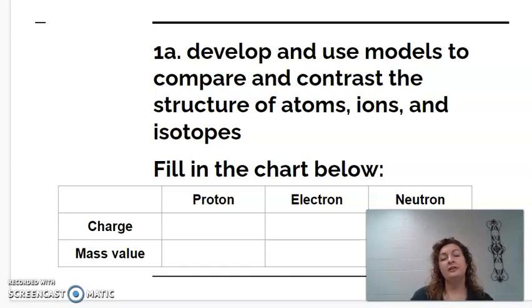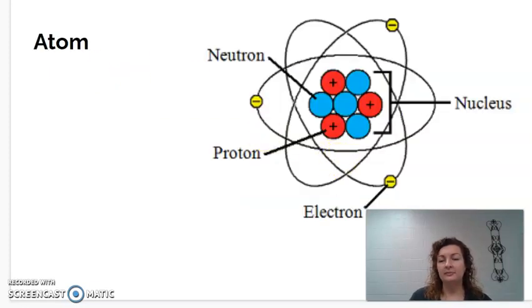So the very first thing that you have on your paper is this chart, and it's asking you about protons and electrons and neutrons, but let's talk about where they're found first in an atom. So here is a picture of an atom, and you can see that there is a part in the center which is called the nucleus.